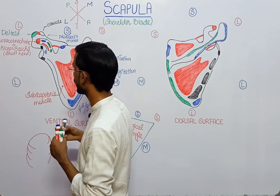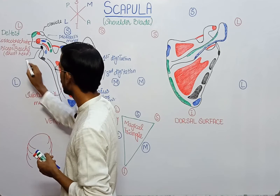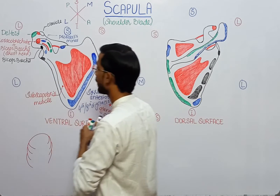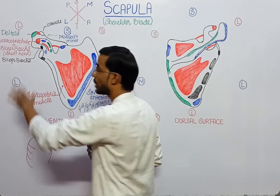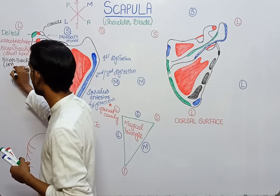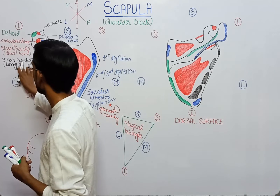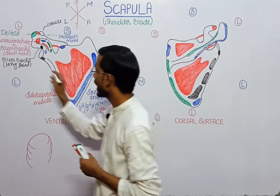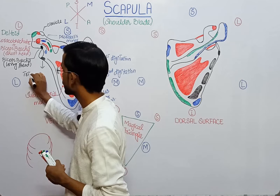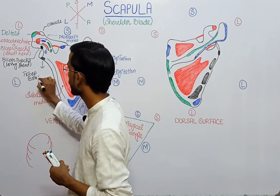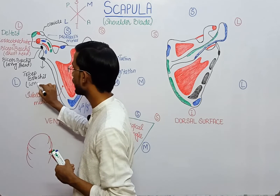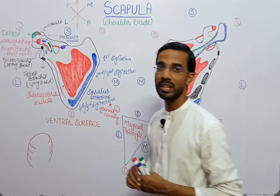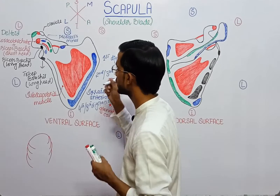This cavity is the glenoid cavity. At the upper portion of the glenoid cavity, the long head of the biceps brachii muscle will attach. At the lower portion of the glenoid cavity, the long head of the triceps brachii will attach at the inferior side of the glenoid cavity.